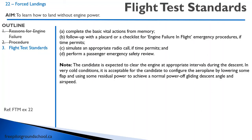You're expected to perform these vital actions as we just discussed. The checklist says to follow up with a placard or emergency checklist for engine failure in flight. If you want to pull out a checklist you can, but you're best off just doing what we covered and focusing on flying rather than looking for a checklist. Make sure you make your appropriate radio calls and passenger briefing. That concludes forced landings — we'll see you in the next lesson.